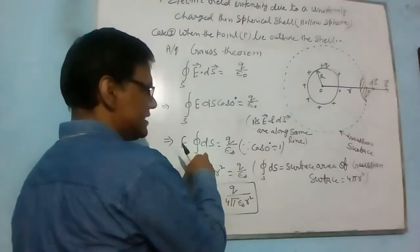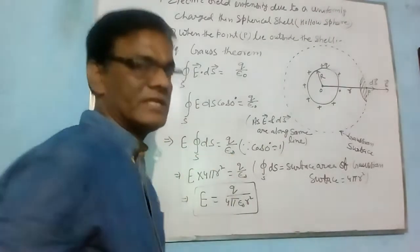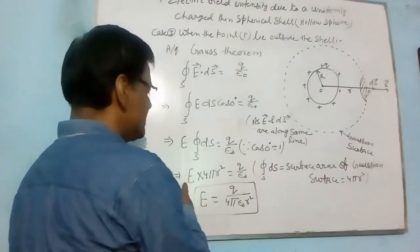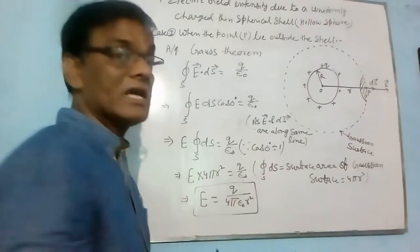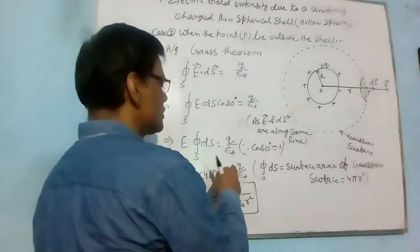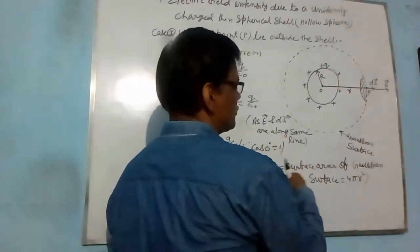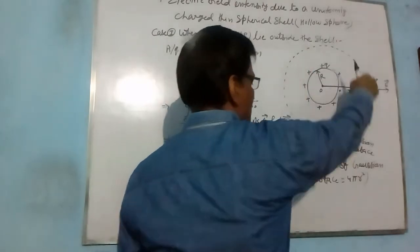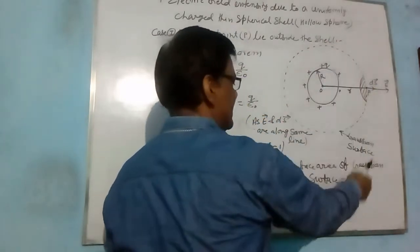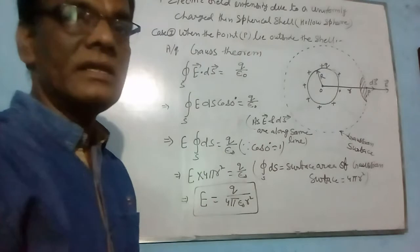Or E·dS equals Q by epsilon naught, or E into 4πR² equals to Q by epsilon 0, because dS equals to surface area of Gaussian surface, and that equals to 4πR².